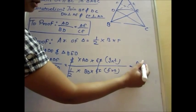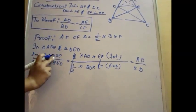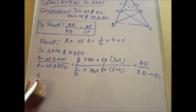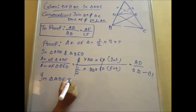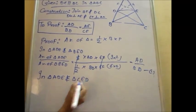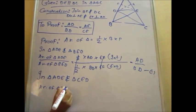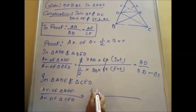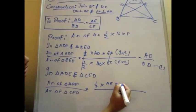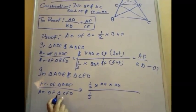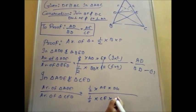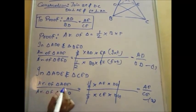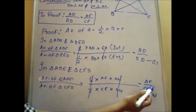So area of triangle ADE upon area of triangle BED equals AD upon BD. This is our first equation. Now, area of triangle ADE upon area of triangle CED equals half into AE into DG upon half into CE into DG, giving us AE upon CE. This is our second equation.